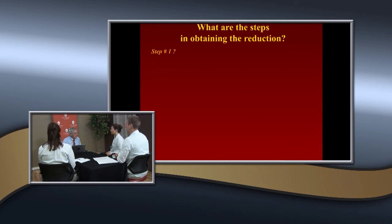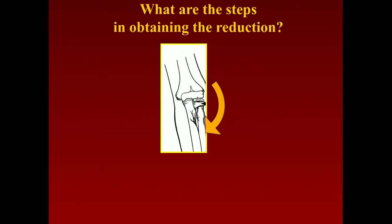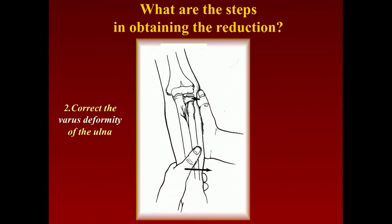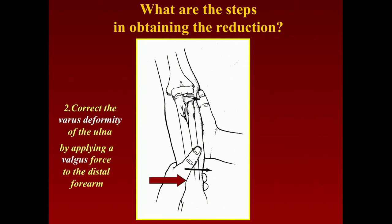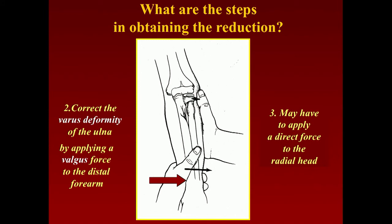To reduce Type 3: first reduce the ulna by extending the elbow to lock the olecranon, then apply a valgus force to correct the varus deformity. When you do that, the radial head usually reduces spontaneously. If not, apply additional pressure. Postoperatively, it's difficult to apply three-point pressure because the fracture is very proximal and the radial head is nearby.